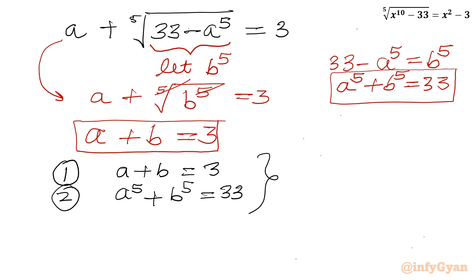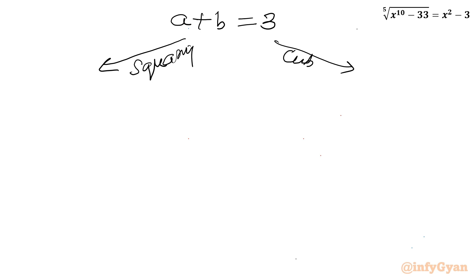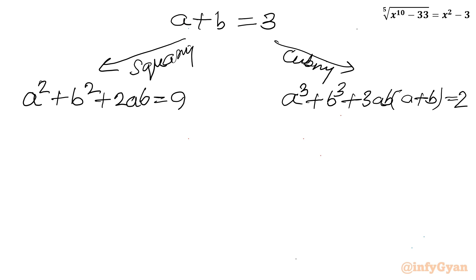I will use squaring and cubing of the first equation to eventually extract the value of a⁵ plus b⁵. Squaring a plus b equals 3 gives: a squared plus b squared plus 2ab equals 9. Cubing gives: a cubed plus b cubed plus 3ab times (a plus b) equal to 3 cubed, which is 27.